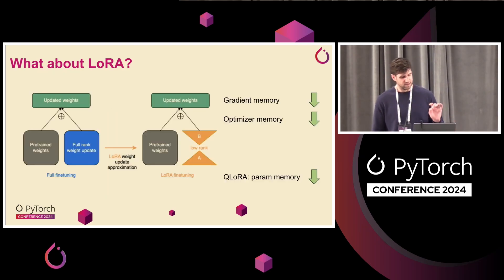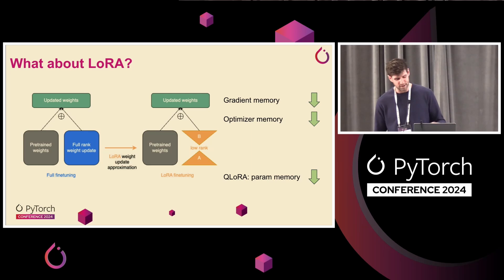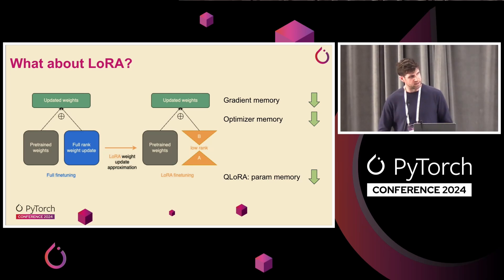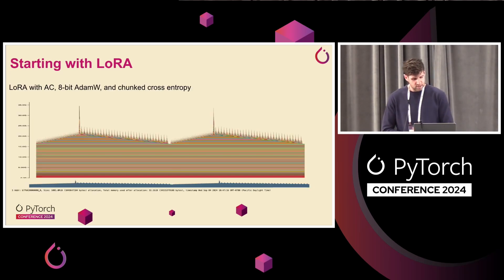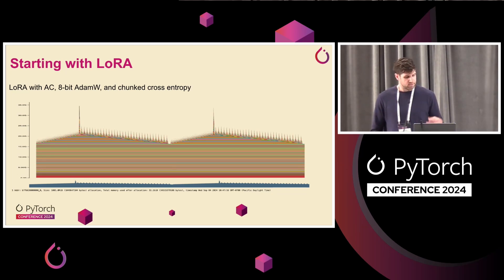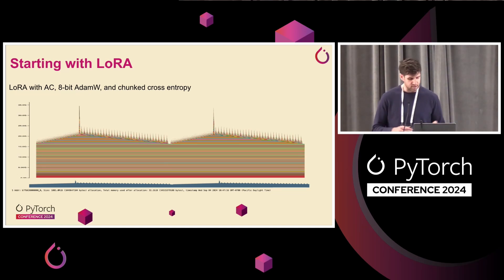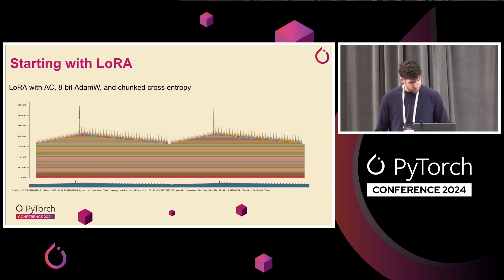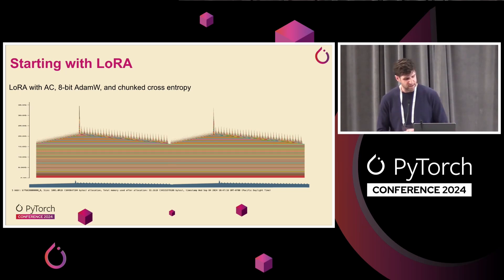Let's take a side trip. This is all full fine-tuning. A lot of people, if they actually care about memory efficiency, aren't going to be doing this — they're going to be doing LoRA or QLoRA. LoRA is great: you save on gradient memory and optimizer memory. With QLoRA you can also save on parameter memory. Let's go through the same exercise with LoRA. TorchTune provides recipes for LoRA, single device or distributed. Keeping roughly the same config, you can see we save about 15 gigs right off the bat just by applying LoRA, and we still have this cross-entropy spike. But the base weight chunk sitting around all the time is where QLoRA will help.